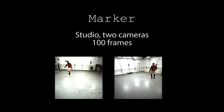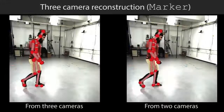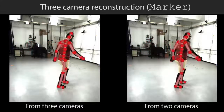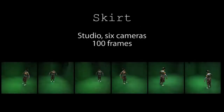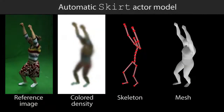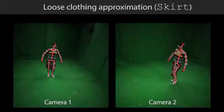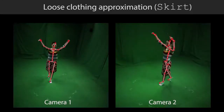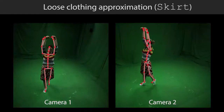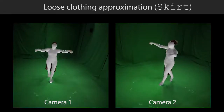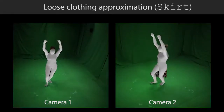Our approach is even capable of estimating motion and shape from only two cameras. Even though the body model was learned from tight clothing scans, our approach handles general apparel well, including skirts, correctly reconstructing the overall shape and body dimensions. This opens the door for further refinement of garment and high frequency details.